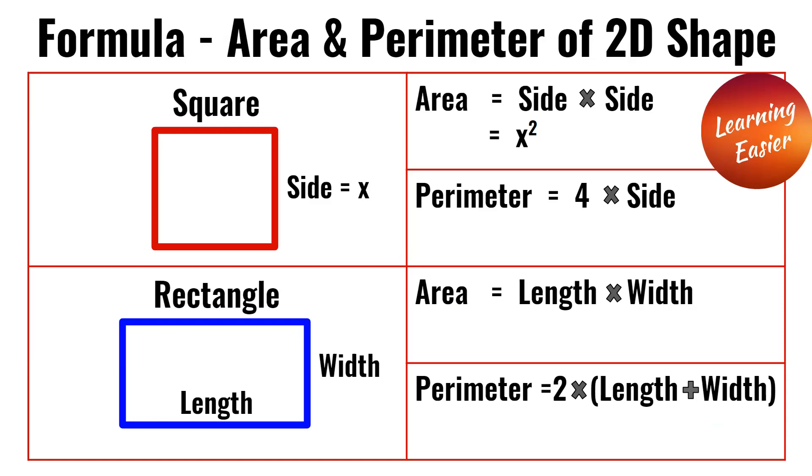For the rectangle, the area is length times width and the perimeter is 2 times (length plus width).